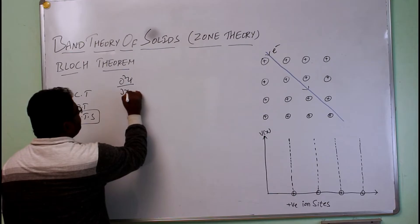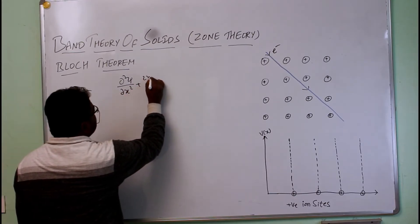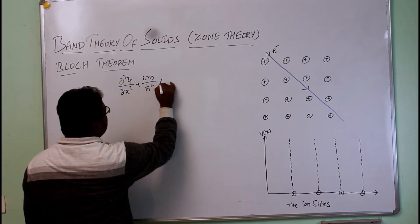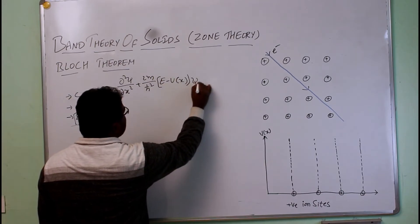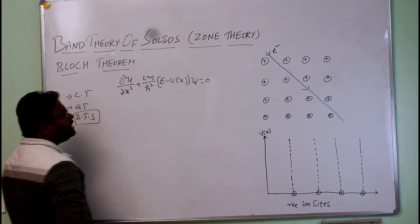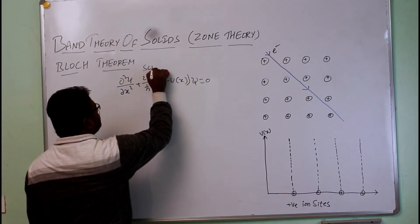d²ψ/dx² + (2m/ℏ²)(E - V(x))ψ = 0, which is a well-known equation, which is the Schrodinger equation.